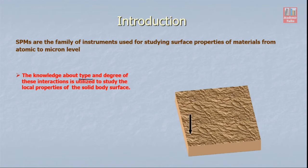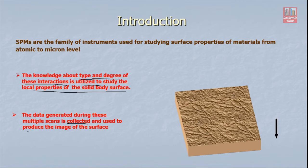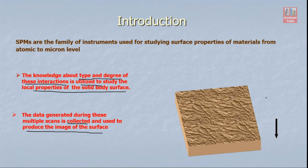Because of this small separation, there are very strong interactions, and studying these interactions gives us a lot of information about the sample surface. The knowledge about the type and degree of these interactions is very important. Once we get this kind of information, it can be utilized to study the local properties of the solid body surface. The data collected from these interactions is used to produce an image of the surface.